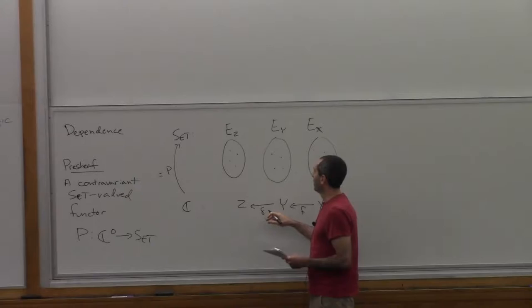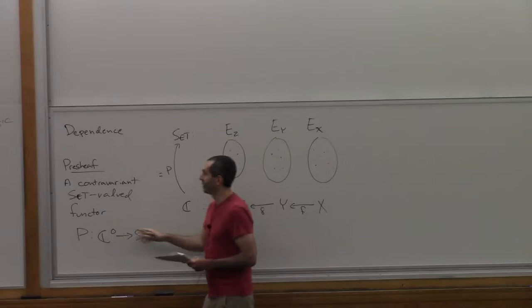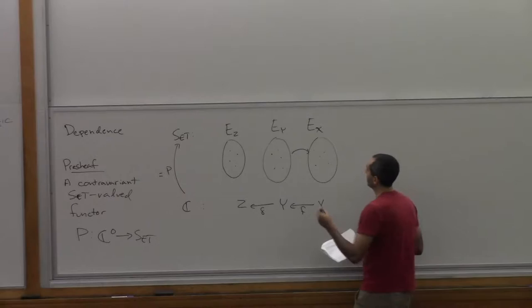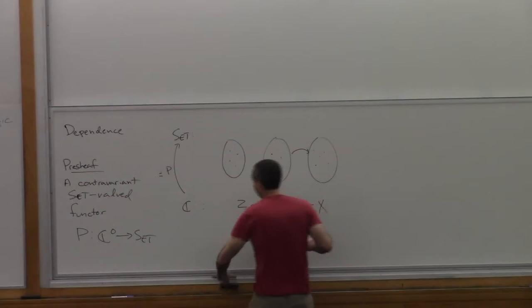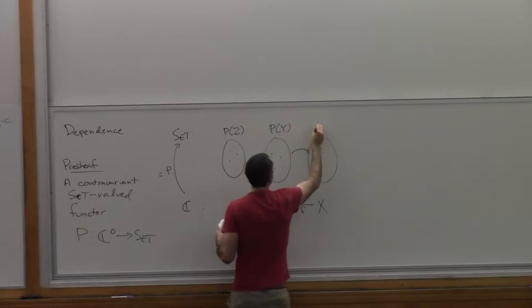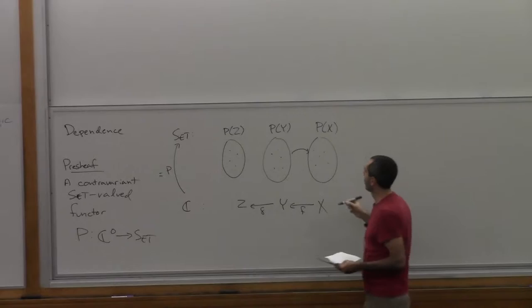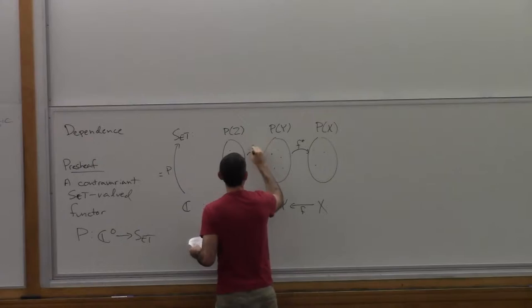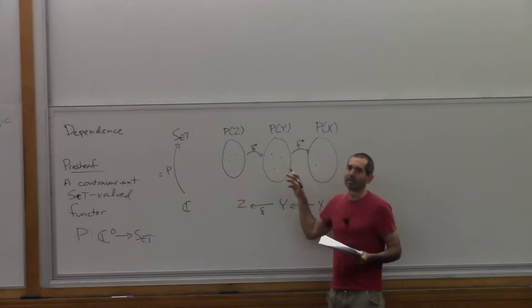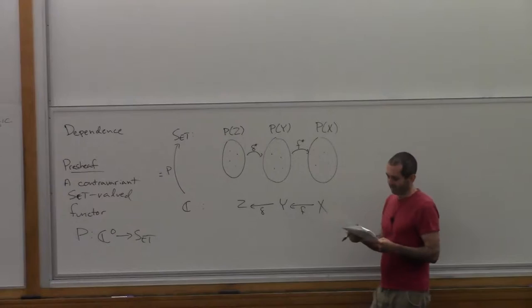So that means for every arrow in C, now we need to have an arrow in Set, but going the other way because of the opposite. So for F, the arrow we have to have here — and for conventional reasons, instead of writing P of F we write F upper star. And what is a functor between sets? It's just a function. So we just have functions between these sets.